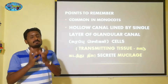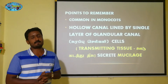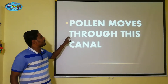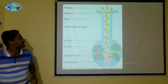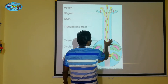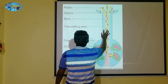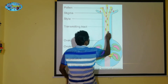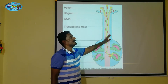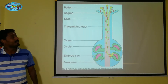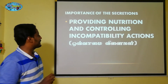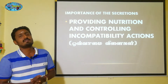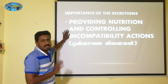Already I have told that here pollen grains are in the rose color region. This is one style - this is the transmitting tract. This is the inner layer - a cross section showing the inner layer of transmitting tissue. Now, the fluid is not available freely; the secretion is available. First of all, nutrition - it is called nutrition.